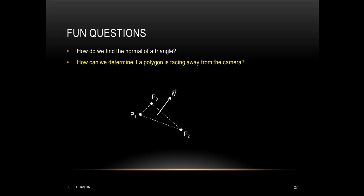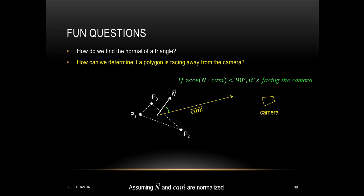The next question is: how can we determine if a triangle is facing away from the camera? The camera has a viewing direction which is just a vector. We take that camera vector, move it toward the normal, and reverse its direction. Then it's a matter of determining the angle between those two vectors. If the arc cosine of the dot product between the normal and the camera vector is less than 90 degrees, then the triangle is visible — assuming the normal and camera vectors are normalized.